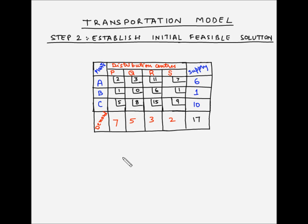In the previous video we saw the first step for solving a transportation model problem, where we took a real-life example and formulated a transportation table. Now the next step, which is the second step, is to establish an initial feasible solution. This is the table that we arrived at in the first step of the transportation model. There are various methods to find out the basic feasible solution.